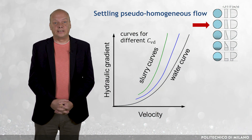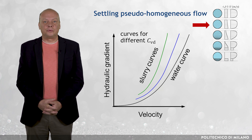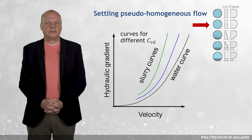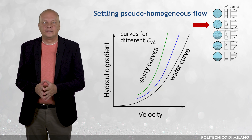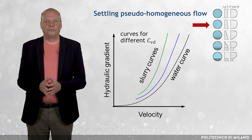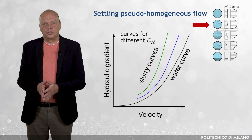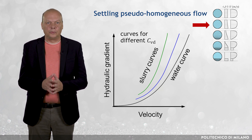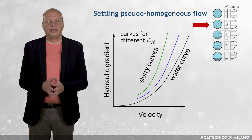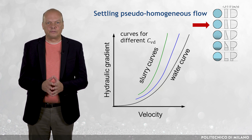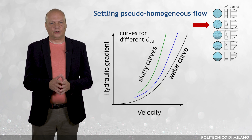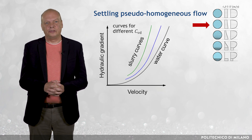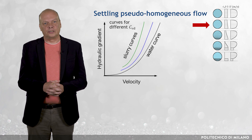In pseudo-homogeneous settling slurry flow, the pressure gradient increases with velocity in the entire range of flow velocities of practical interest. The variation in frictional hydraulic gradient follows a fluid-like form, meaning that particles are supposed to contribute to flow friction through their interaction with the carrying liquid — not through contacts with each other and with the flow boundary. The curves become steeper with increasing delivered concentration of solids, indicating that increasing these parameters increases the friction losses in a pipe.